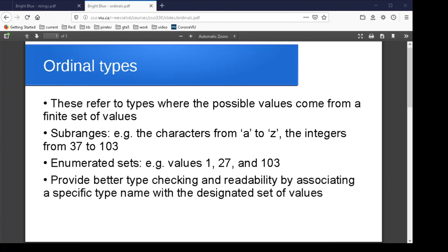The ordinal types refer to anything where you've got a finite set of values that you want to treat as a named data type. So this might be sub-ranges for things that are a finite set of values. For instance, you might pick the characters from 'a' to 'z' or the integers from 20 to 50 or whatever it might be.